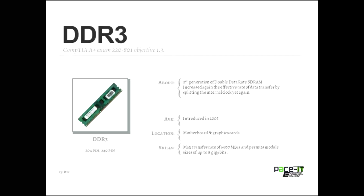Then we jumped into DDR3, the third generation, introduced in 2007. It has a max transfer rate of 6,400 megabytes per second on a 100 megahertz clock cycle. It also allowed for larger sizes of memory modules — larger sticks. That's when you started to see larger capacity RAM.